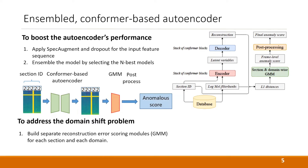To boost the autoencoder's performance, we apply SpecAugment and dropout for the input feature sequence not only during training but also during inference. When we replicate the input sequence and apply different masking for each sequence, we calculate the reconstruction error for each sequence and aggregate the result using a pooling operation. This allows us to obtain ensemble gains even when using a single model. To further improve performance, we ensemble the models by selecting the N-best models. To address the domain-shift problem, we build separate reconstruction error scoring modules for each section and each domain.